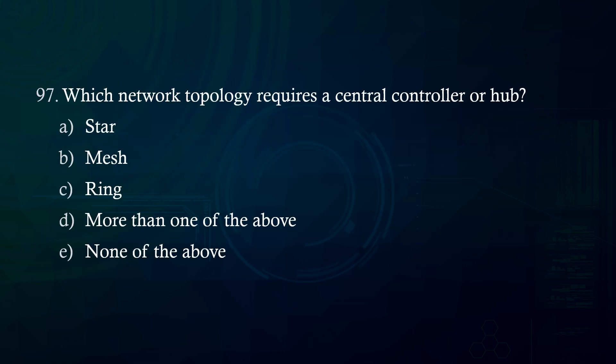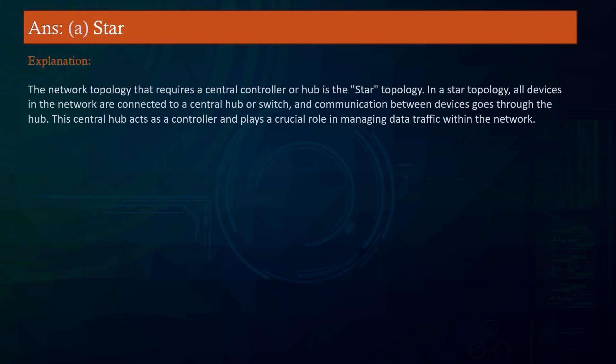Which network topology requires a central controller or hub? A. Star. B. Mesh. C. Ring. D. More than one of the above. E. None of the above. Answer: Star. Explanation: The star topology requires a central controller or hub. In a star topology, all devices are connected to a central hub or switch, and communication between devices goes through the hub, which acts as a controller managing data traffic.